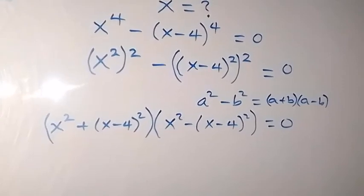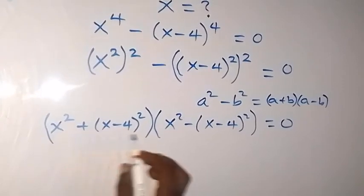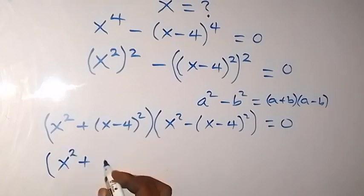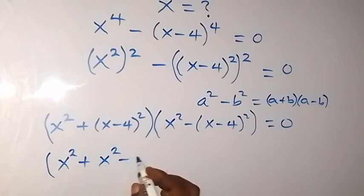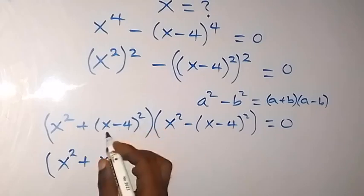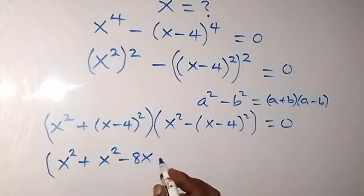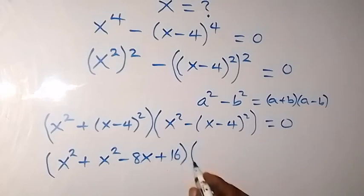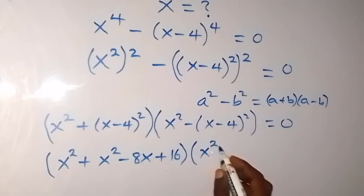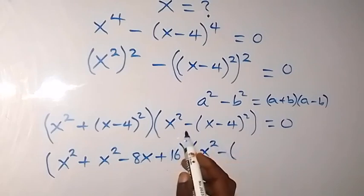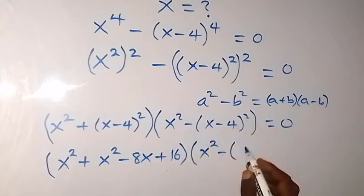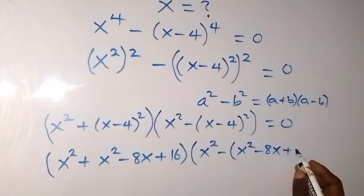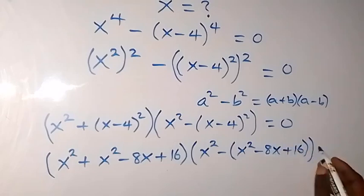In the next step we expand the brackets. In the first bracket we have x squared plus the expansion of (x minus 4) squared, giving us x squared minus 8x plus 16. In the second bracket we similarly have x squared minus 8x plus 16, all equal to 0.